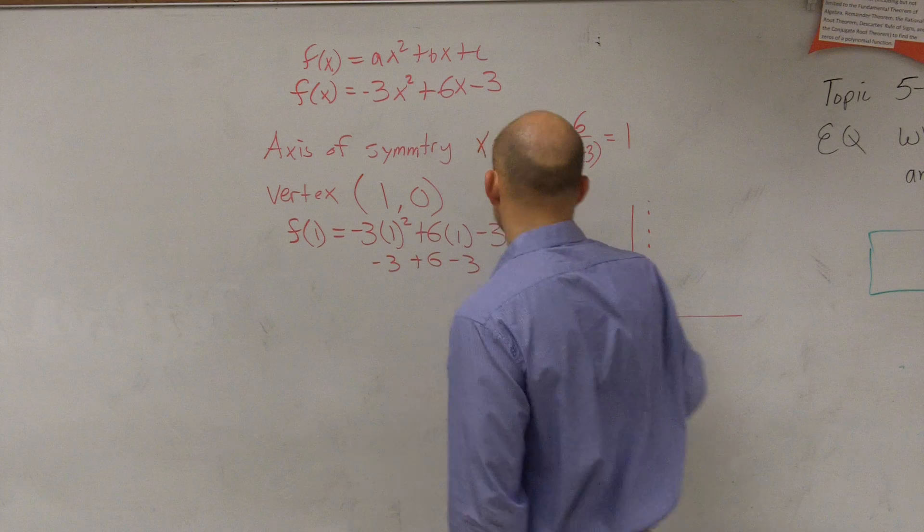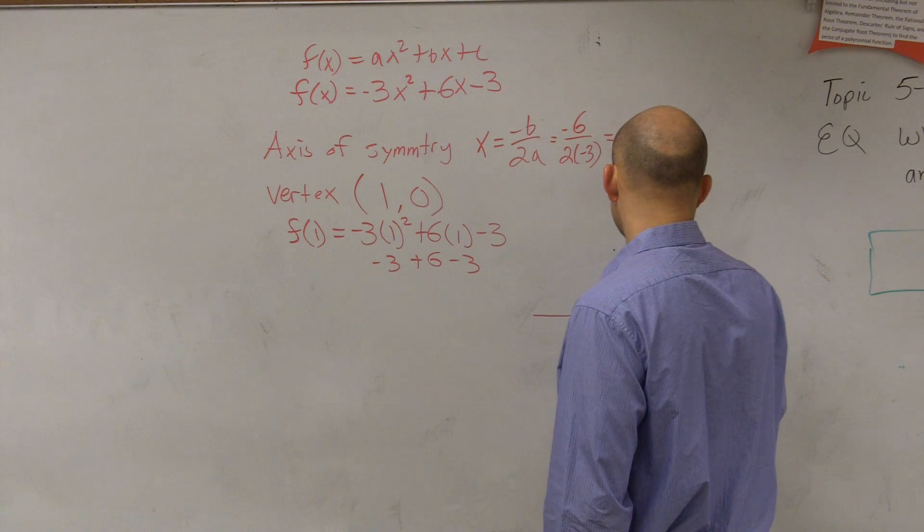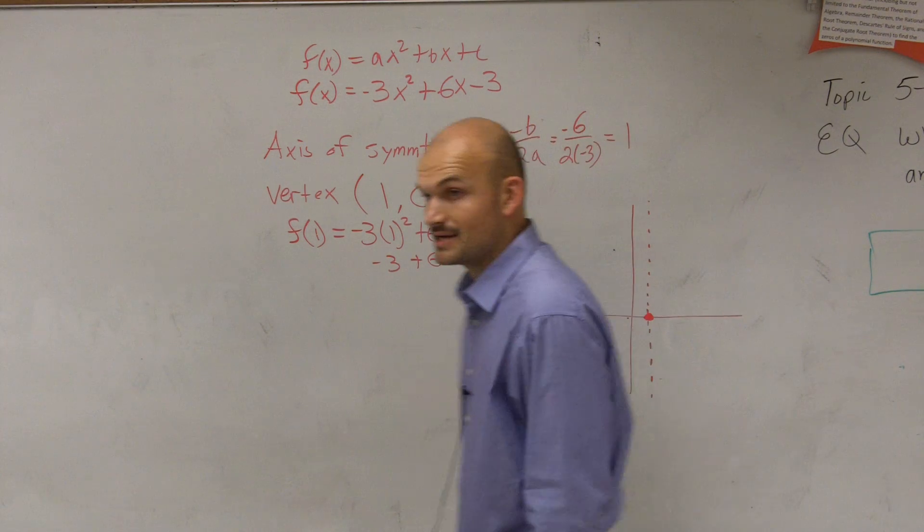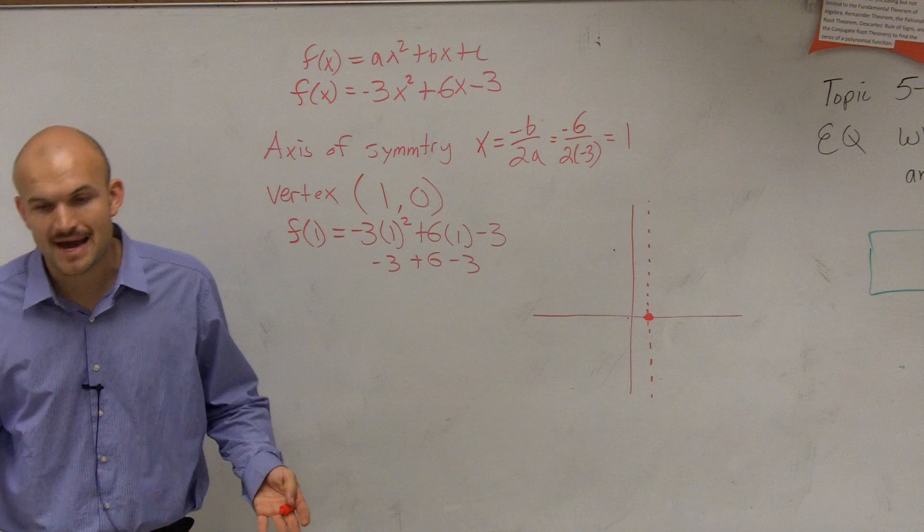So therefore, we have 0. So now I go to that point, over 1, 0. So that's my vertex. All right? That's either going to be the maximum or the minimum.